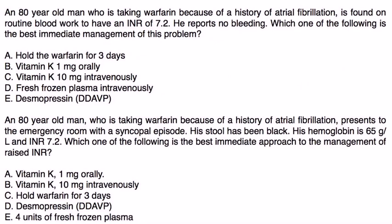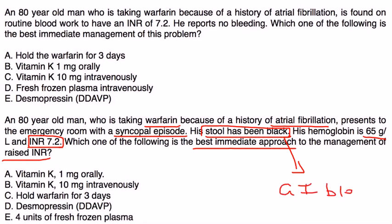Vignette 3: An 80-year-old man on warfarin for AFib presents to the ER with a syncopal episode. His stool has been black, hemoglobin is 65, and INR is 7.2. Black stool suggests an upper GI bleed, so this is a bleeding patient with a supra-therapeutic INR. He definitely needs fresh frozen plasma, and in addition you would give a high dose of vitamin K. The best immediate approach is fresh frozen plasma because it most urgently reverses the warfarin.